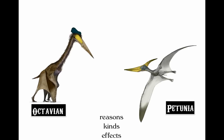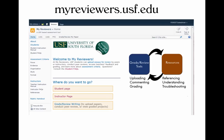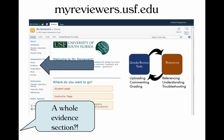Now, back to our generalizers, Octavian and Petunia. After they gave their really general stories, they weren't getting the effects they wanted — no one seemed to be convinced. They now wanted to know what kinds of evidence they could use to better their own conversations and circumstances. So naturally, they went to the computer — more specifically, to myreviewers.usf.edu, a resource they remembered from taking ENC 1101 and 1102. What they didn't remember was how much informative content there was on the site, including a whole section devoted just to evidence.